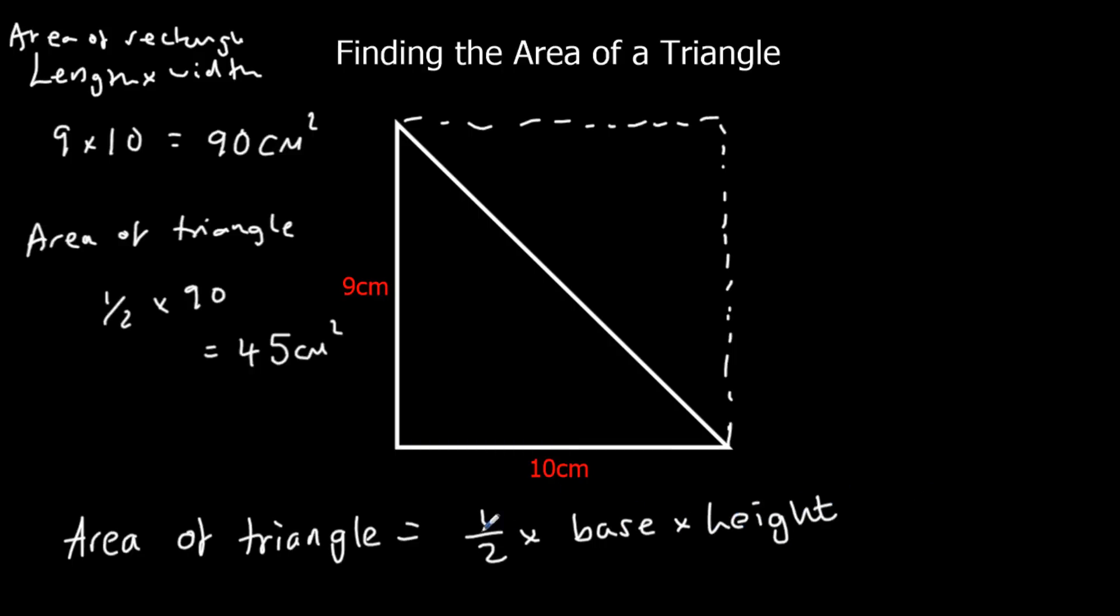What we can do is we can do half times 10 times 9. So in this case, that would be half times 10 times 9. Half times 10 is 5. 5 times 9 is 45 cm squared again.